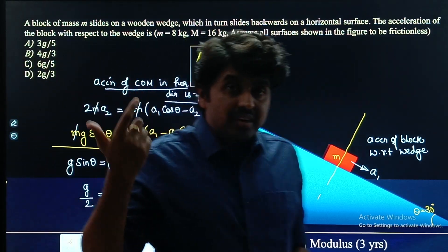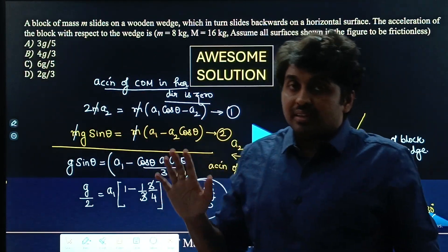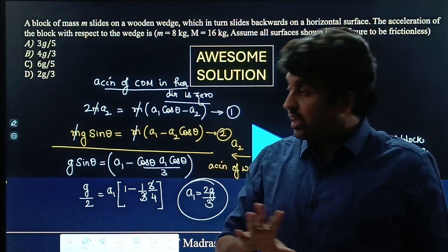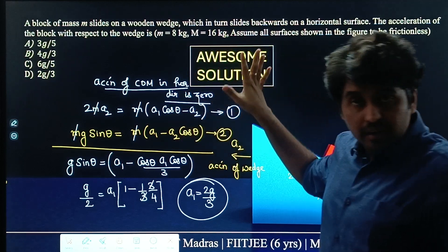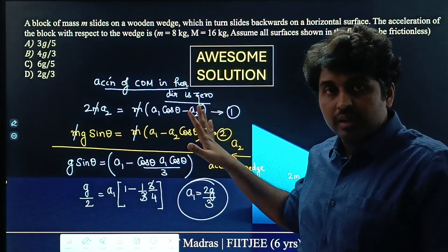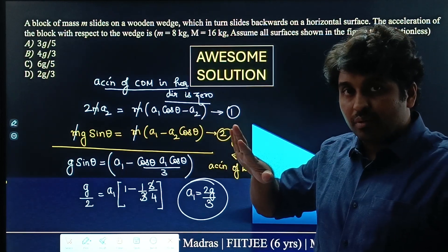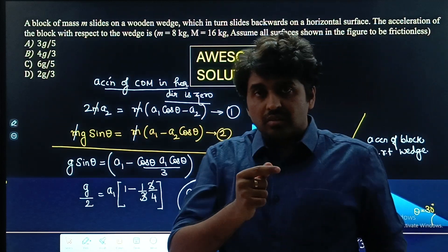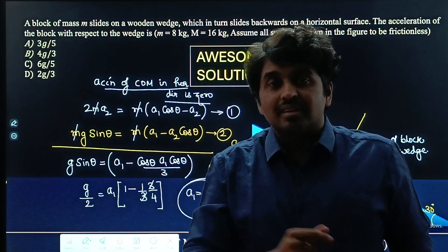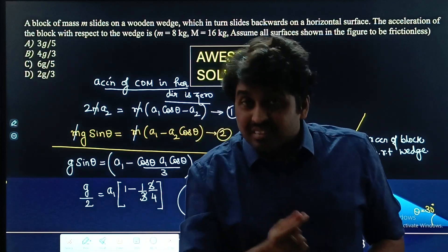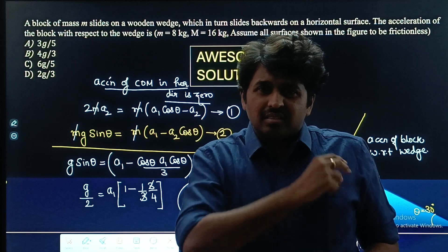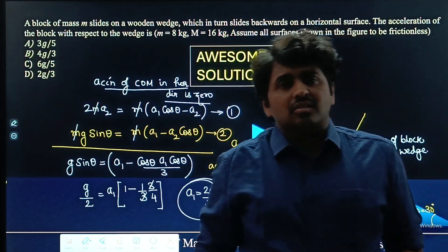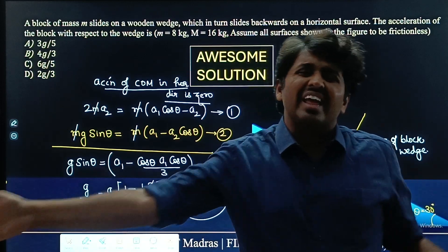See the difference between the previous method and this method — in the standard method we had an extra variable which was the normal reaction. Here, we have eliminated that variable entirely. Because we eliminated one variable, we have fewer equations, fewer steps, fewer silly mistakes, less time — and ultimately a better rank. I hope you all liked this. See you all in the next video.